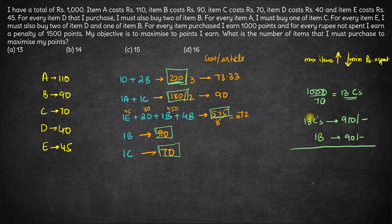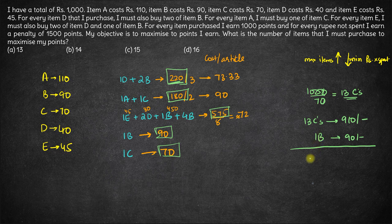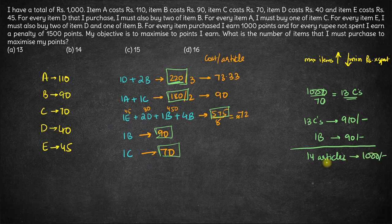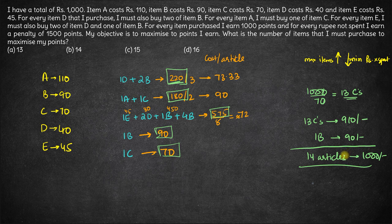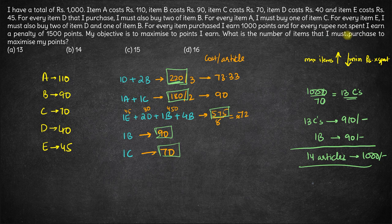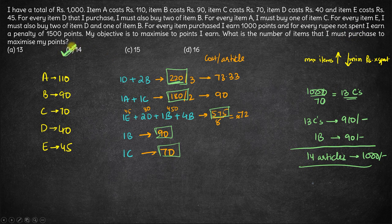So effectively you buy 13 Cs and you buy 1 B. So you buy a total of 14 articles or 14 items and you spend the full 1000 rupees such that you don't earn any penalty. So to maximize the number of points the number of articles that I must purchase is 14. Option B is the right answer here. Thank you.